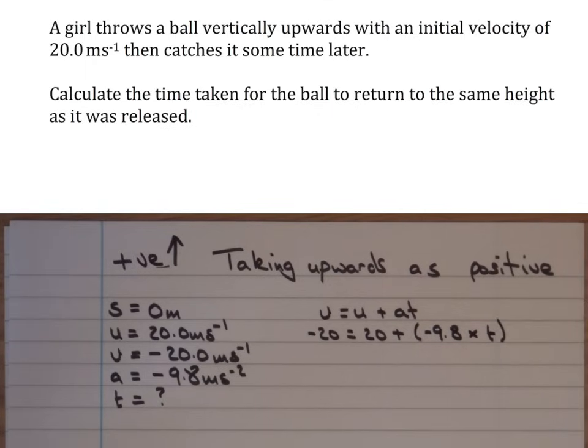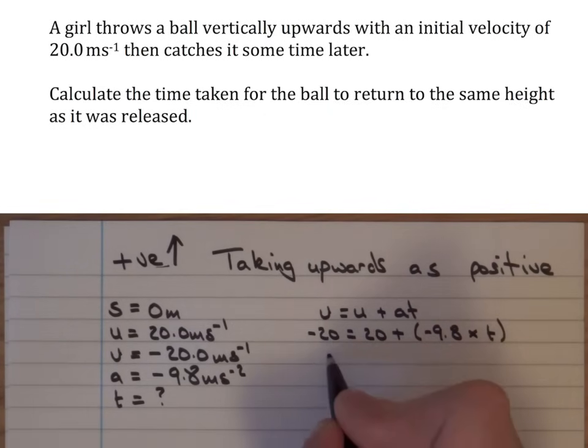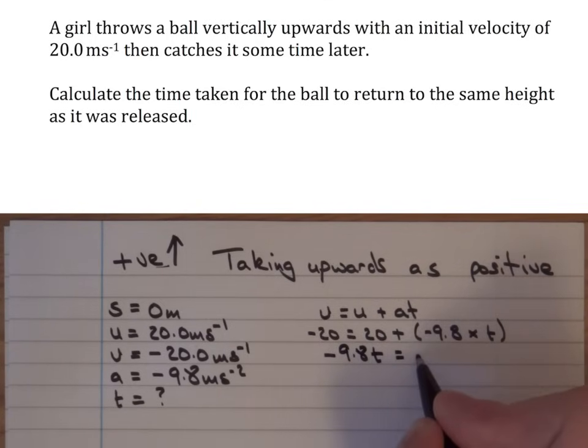v is negative 20 is equal to 20 plus negative 9.8 times t in brackets. What I'm doing next is I'm going to subtract 20 from both sides. I'm also going to switch the right-hand side with the left-hand side. And what that will give me is negative 9.8 t is equal to negative 40.